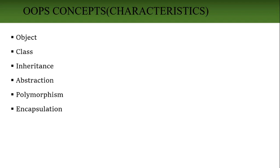Encapsulation is nothing but binding the data — that is, the attributes and functions of the object, the data members and member functions — both combined into a single unit called a class. That is encapsulation. We already discussed all these things in our last class. Just revise the basic concepts of OOP.